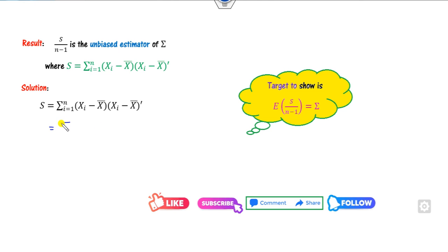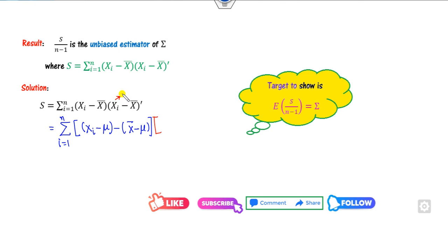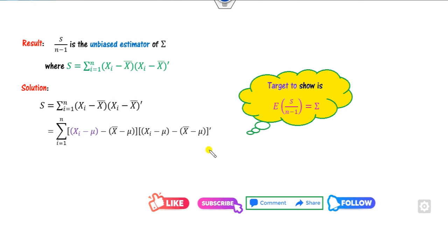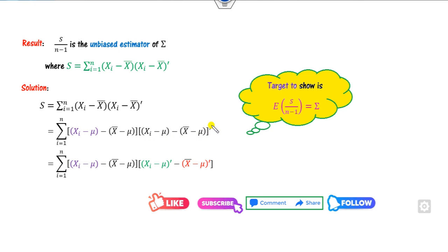Now, I can add and subtract mu from each term. This gives x-bar minus mu. Similarly, I add and subtract mu from the other term, giving minus mu. Since this is a matrix, we know that for two matrices A and B, the transpose of A minus B equals A transpose minus B transpose. Because of this transpose property, I can expand.